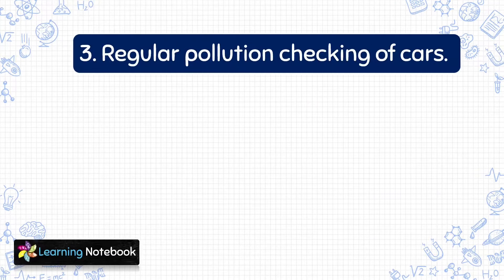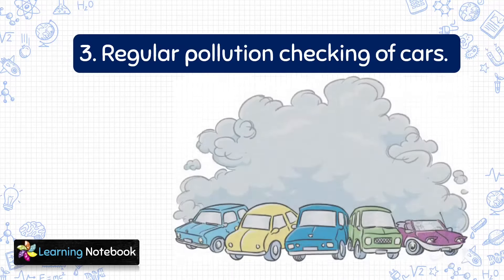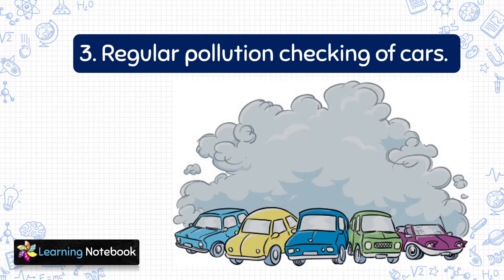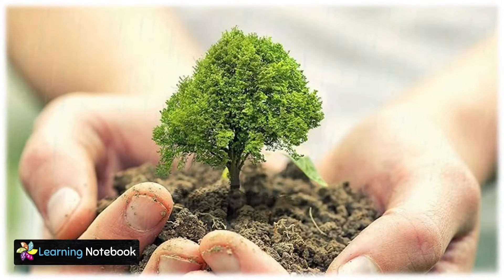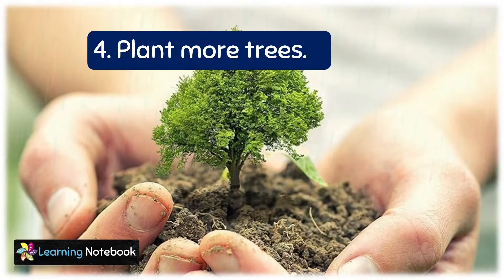The third way to reduce air pollution is regular pollution checking of cars. Cars should be properly maintained and regular pollution checking should be done to avoid air pollution. The fourth step to reduce air pollution is to plant more trees. We should plant more trees to increase the oxygen level and decrease harmful carbon dioxide in the air.